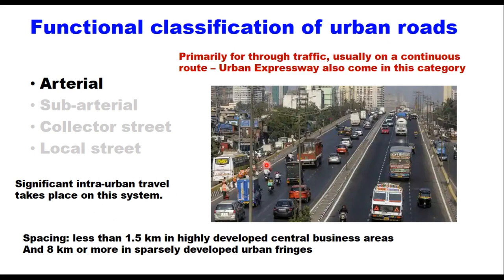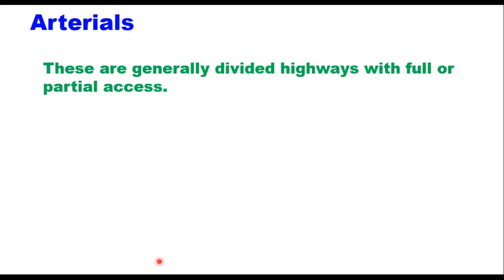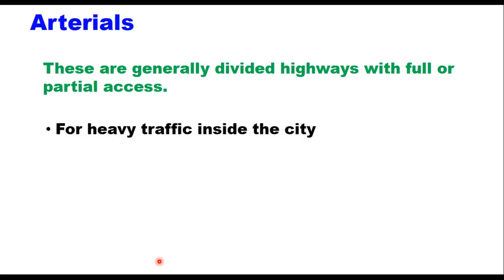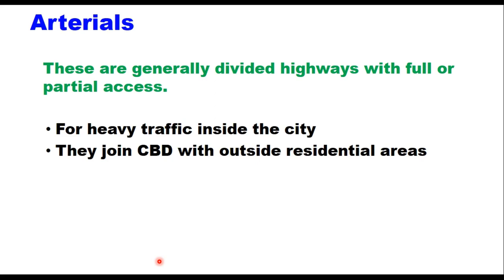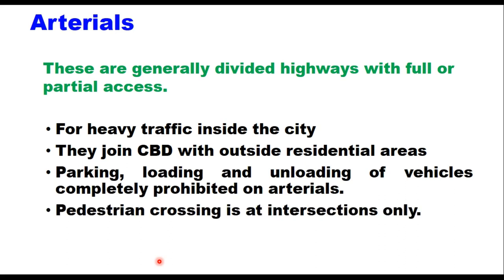The spacing between arterials on an urban network can be less than 1.5 km in highly developed central business district areas, or 8 km or more in sparsely developed urban fringes. These are generally divided highways with full or partial access control, carrying heavy traffic inside the city and joining the CBD with outside residential areas. Parking, loading, and unloading of vehicles are completely prohibited on arterials, and pedestrian crossing is at intersections only.